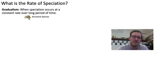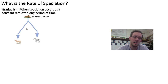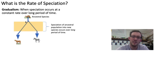Here we've got the ancestral species of horses and zebras. And during gradualism, what you can see happening is that the speciation — that is the divergence of the ancestral species into new species — occurs very gradually over a long period of time.